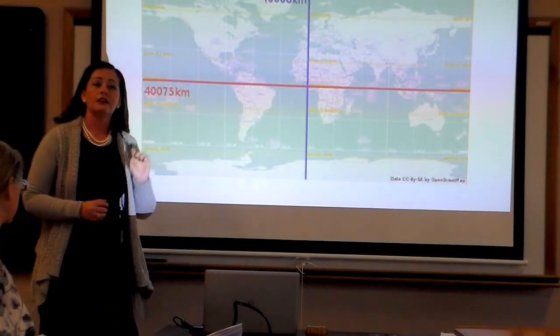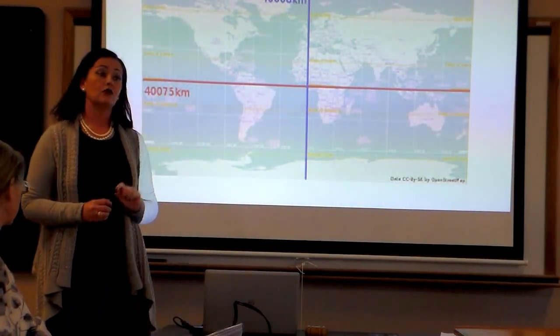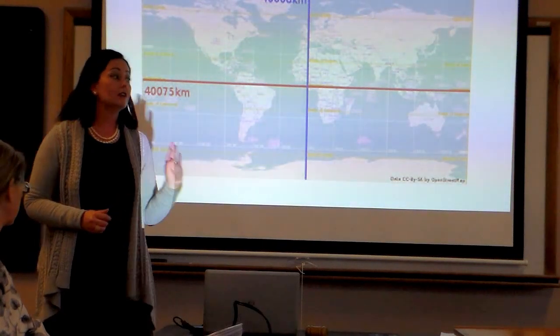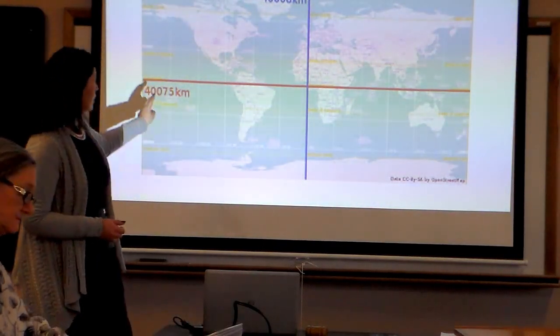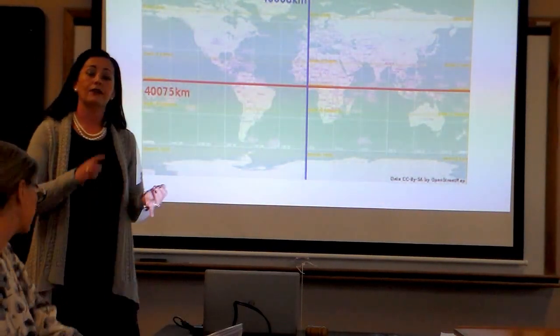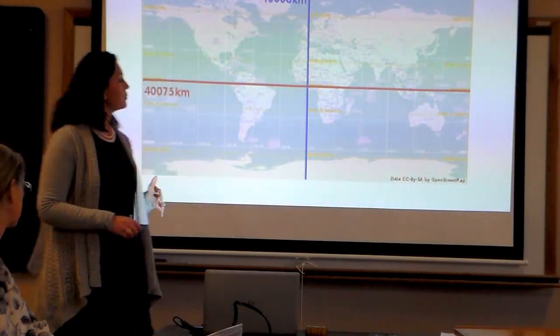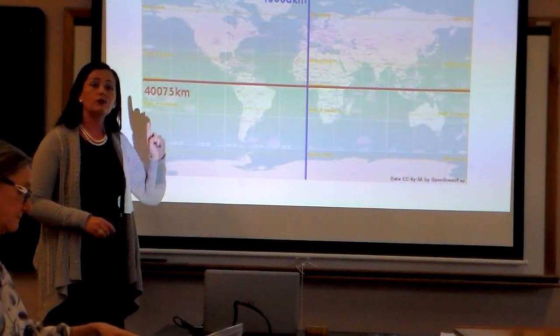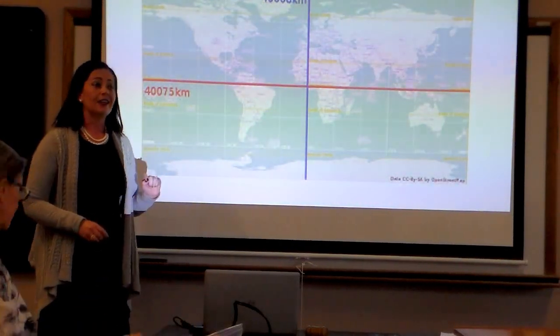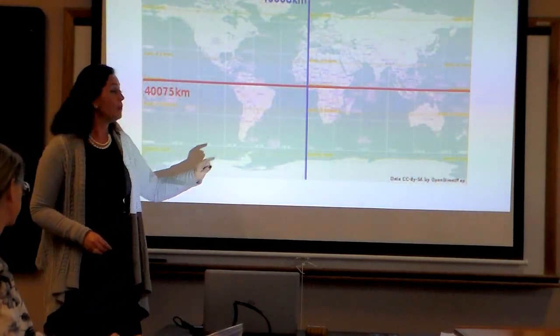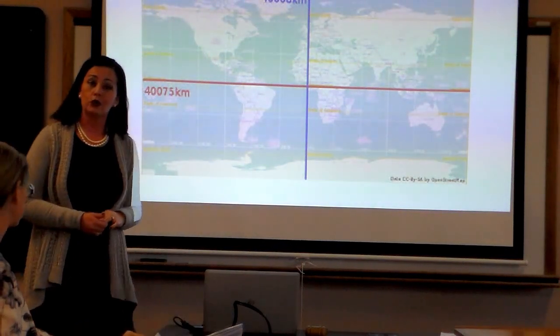This imaginary line crosses 78% water, believe it or not. There are three oceans passing the equator line: the Pacific Ocean, Atlantic Ocean, and Indian Ocean. And only 22% of the equator line is on land. It happens to be Colombia, the country where I grew up.